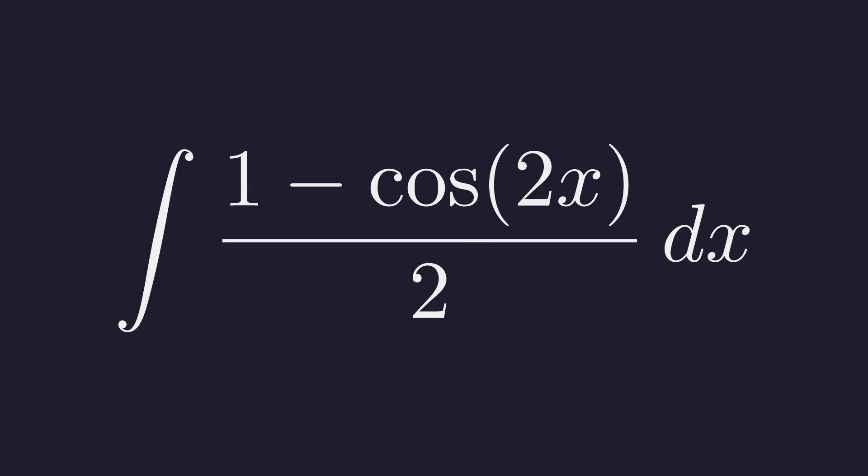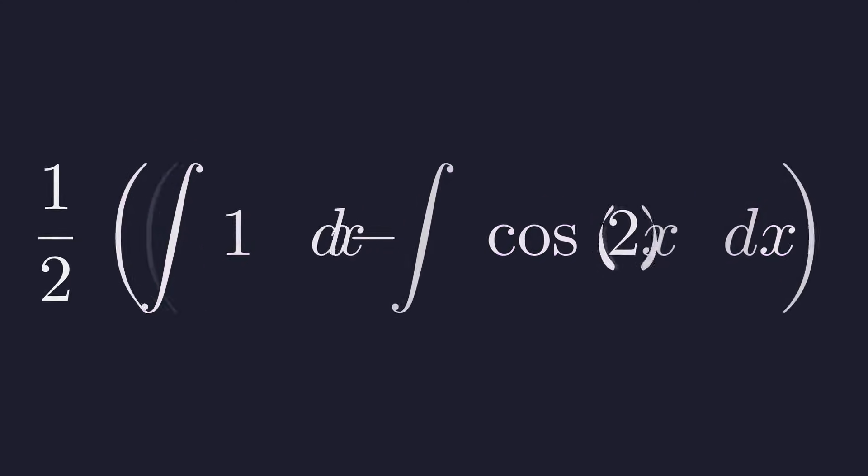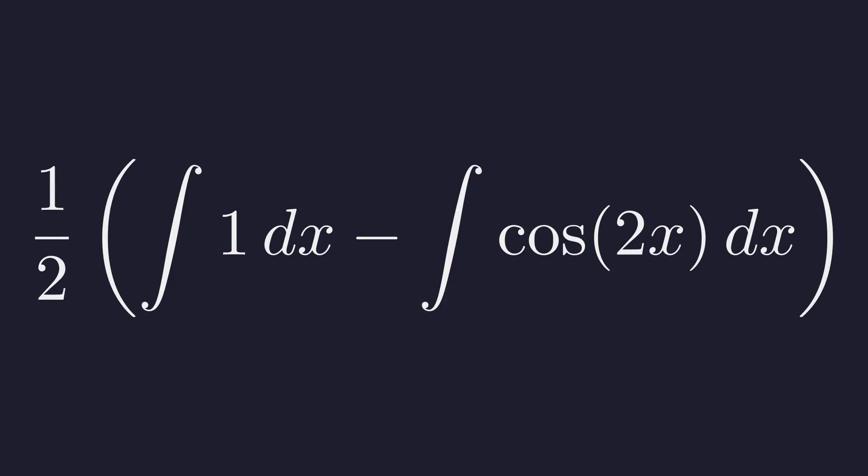The denominator 2 is a constant factor. We can move this constant outside the integral sign. This gives us 1 half times the integral of 1 minus cosine of 2x. We can use the sum and difference rule for integrals to split this into two separate, simpler integrals. Now we have 1 half times the integral of 1 minus the integral of cosine of 2x.